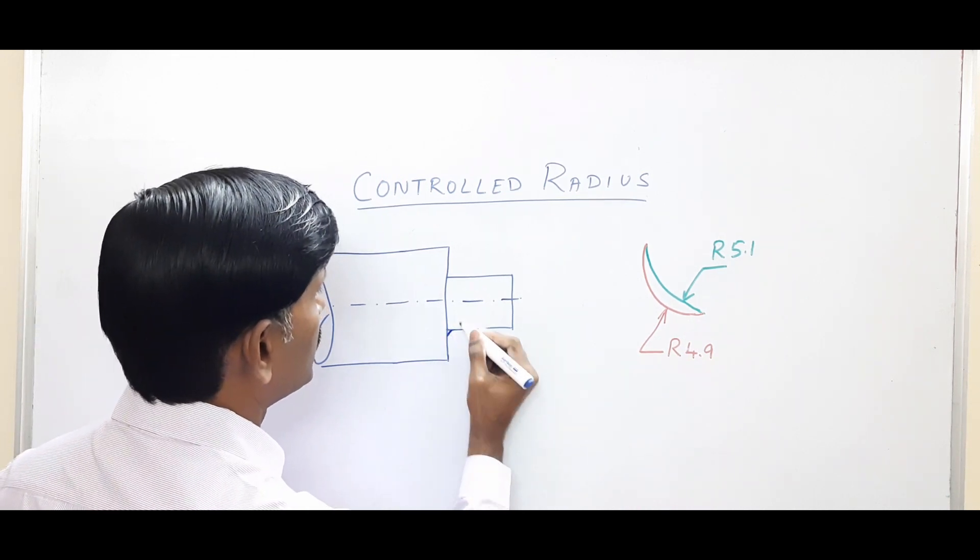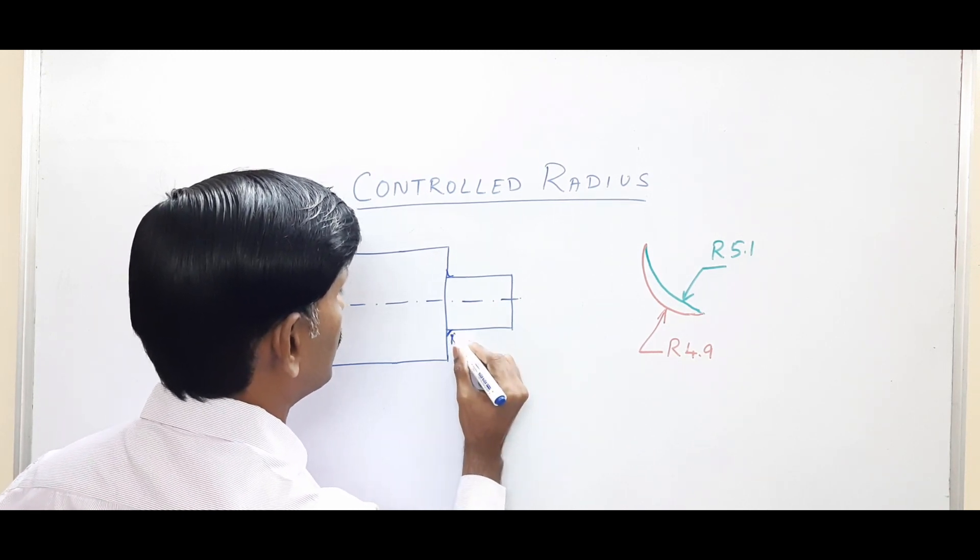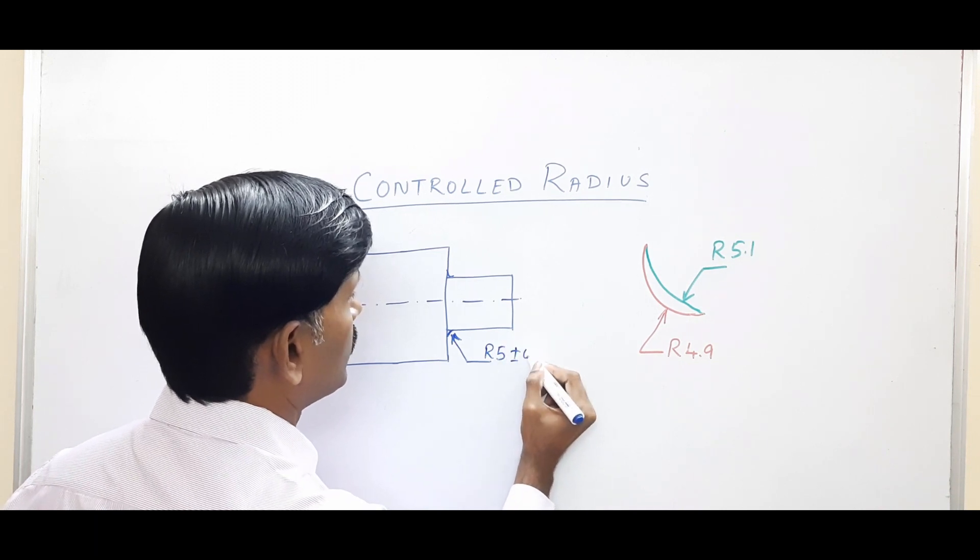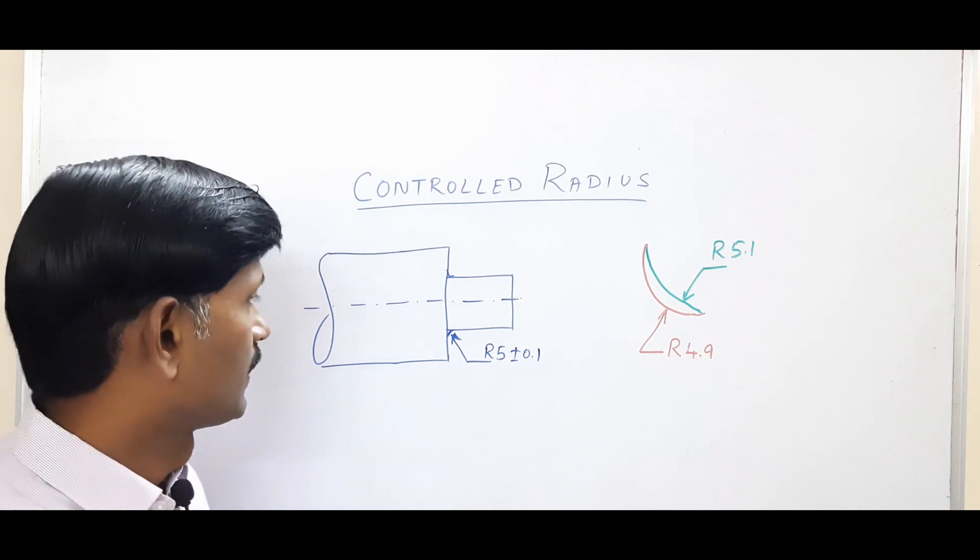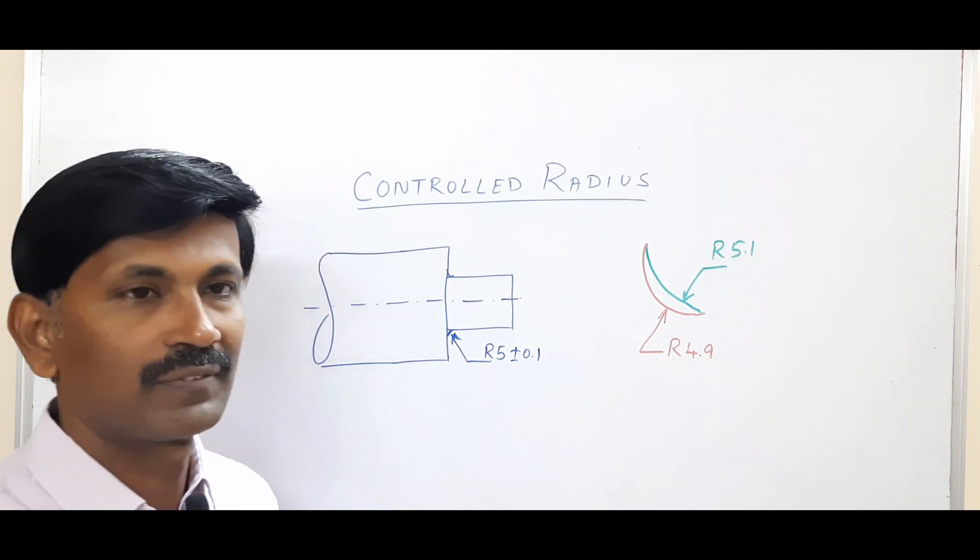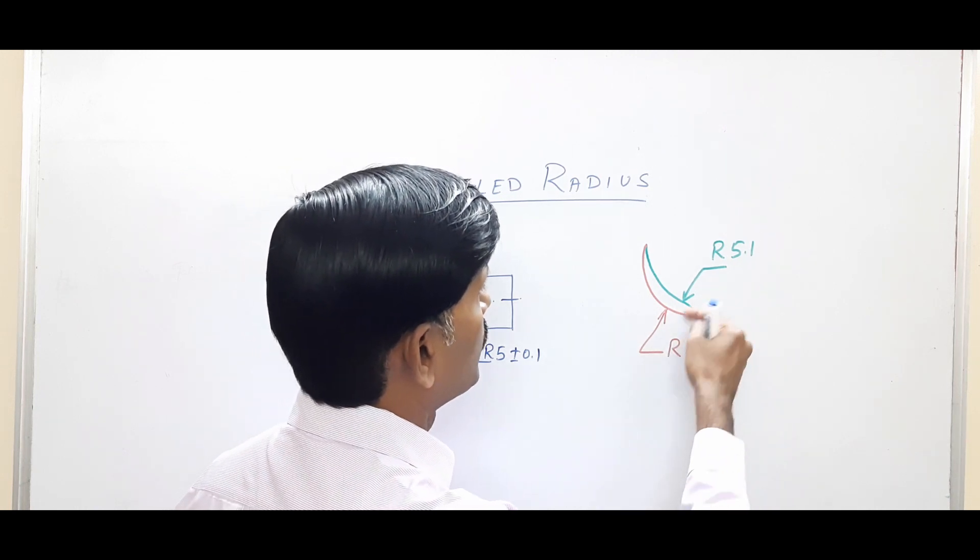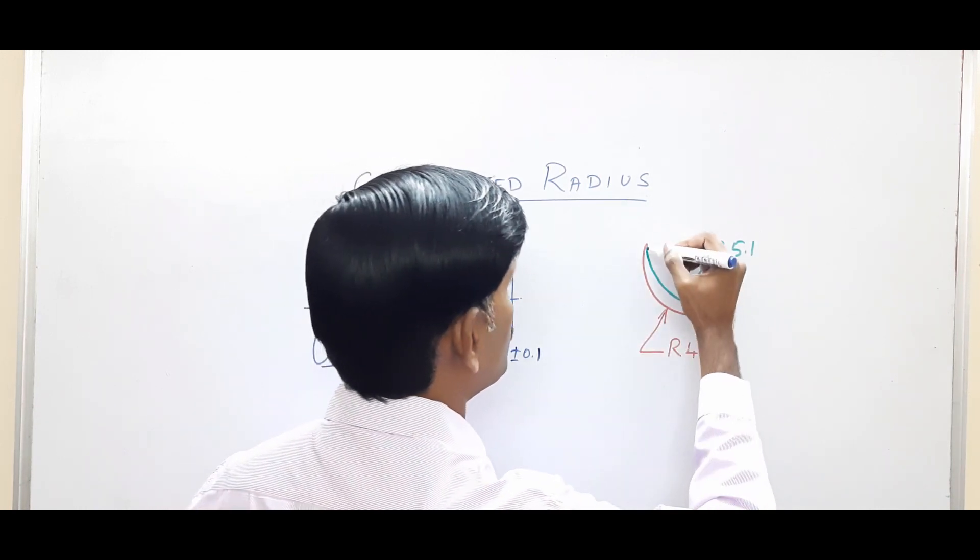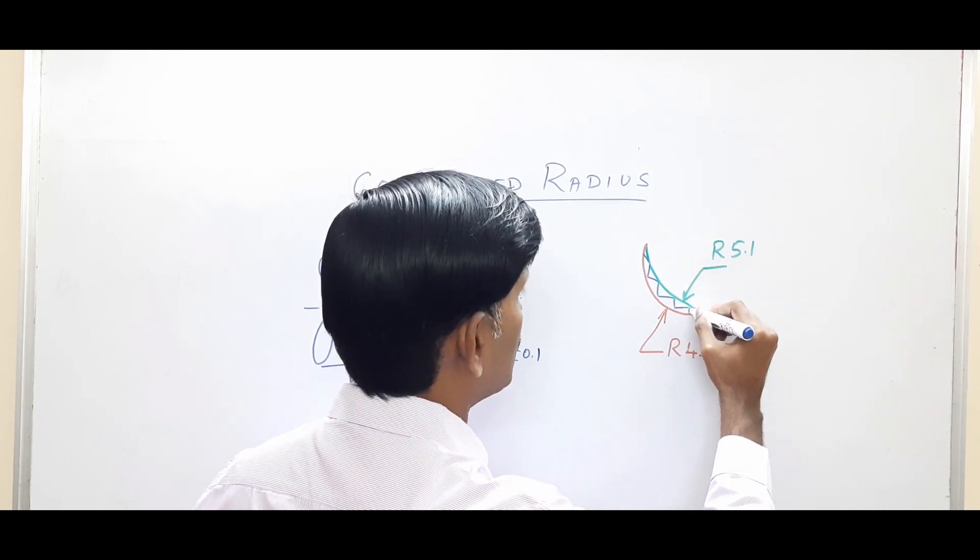So I'll just give a fillet radius with R5 and the tolerance of plus or minus 0.1. So for this, after manufacturing, the actual surface of the fillet must lie within a boundary of R5.1 and R4.9. So we may end up with a surface like this.